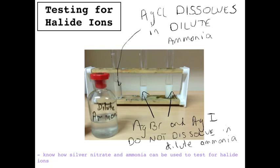You could also say that you could see no visible change for the silver bromide and silver iodide, because you don't see anything change. So if you're in an exam and asked what you see, you just say 'no visible change.'